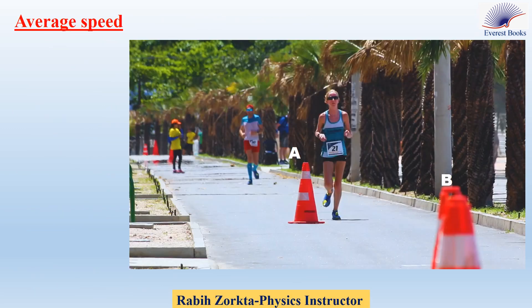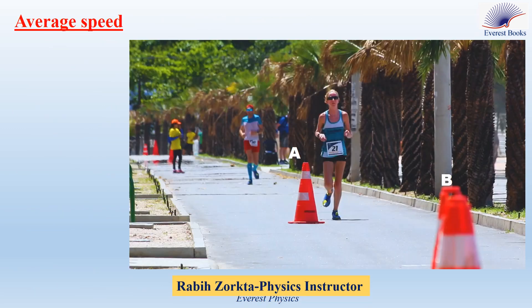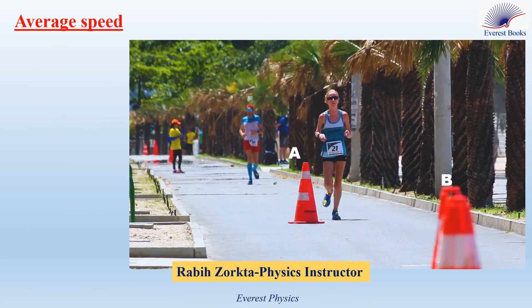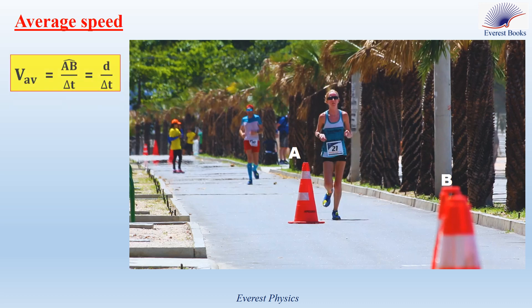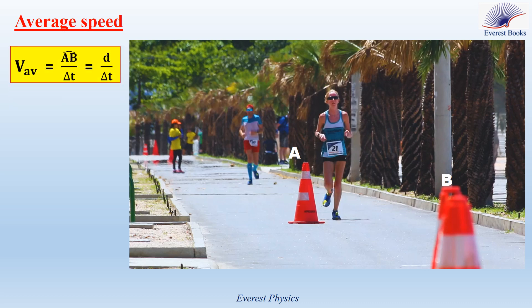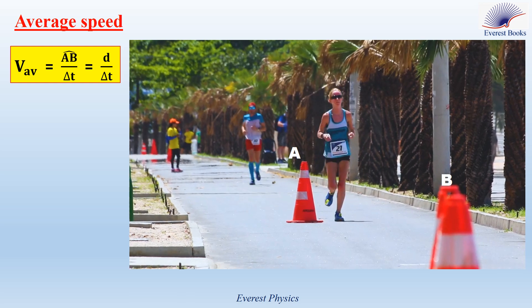The average speed of a moving object is calculated by dividing the distance it travels by the time taken. So, between A and B, the average speed is given by the actual distance between A and B over the time interval delta T.